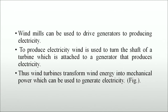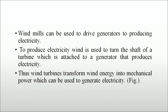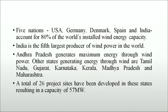Wind turbines transform wind energy into mechanical power which can be used to generate electricity. Five nations — USA, Germany, Denmark, Spain and India — account for 80% of the world's installed wind energy capacity. India is the fifth largest producer of wind power in the world. Andhra Pradesh generates maximum energy through wind power. Other states generating energy through wind are Tamil Nadu, Gujarat, Karnataka, Kerala, Madhya Pradesh and Maharashtra, with a total of 26 project sites developed resulting in a capacity of 57 megawatts.